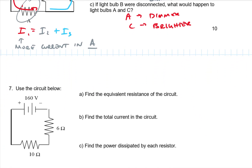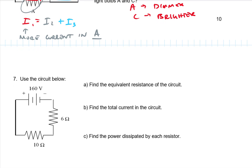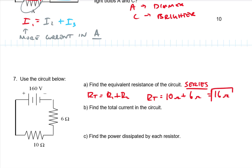Using the circuit below, find the equivalent resistance. This is a series circuit. In a series circuit, the total resistance is R1 plus R2, so 10 ohms plus 6 ohms equals 16 ohms. To find the total current, total current equals total voltage divided by total resistance: 160 volts divided by 16 ohms gives a total current of 10 amps.